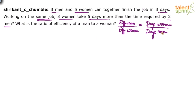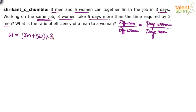When three men and five women together finish the job in three days, the total work is equal to (3m + 5w) × 3, which gives us the total work expression in terms of m and w.